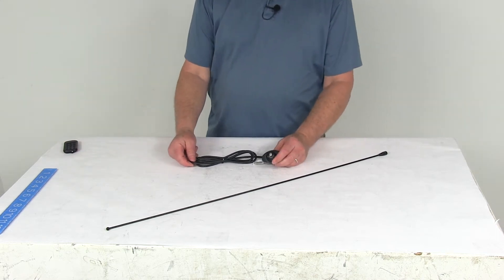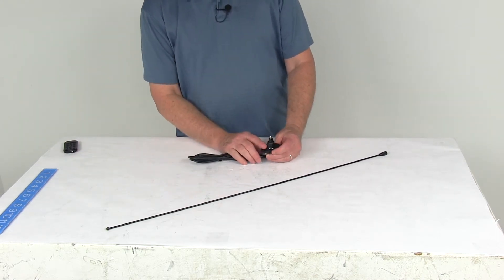Today we're going to take a look at the Jensen Oval Base Antenna. It has this oval mounting base.